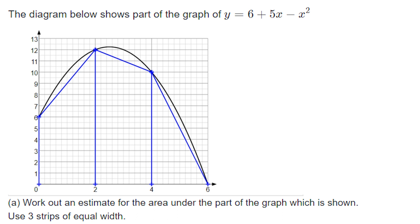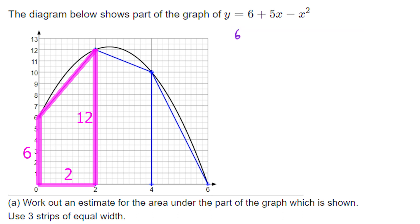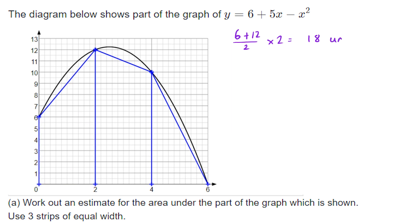For the first trapezium, the width is 2. The left-hand side has a height of 6 and the right-hand side has a height of 12. To find the area of a trapezium, add the 6 and 12 together, divide by 2, then multiply by the width. So 6 + 12 = 18, divided by 2 = 9, multiplied by the width of 2, giving an area of 18.